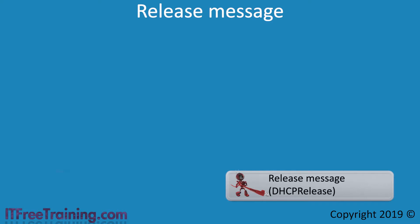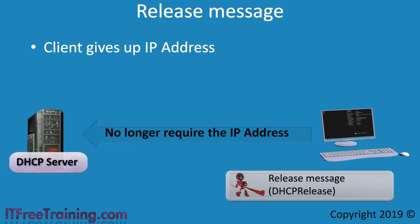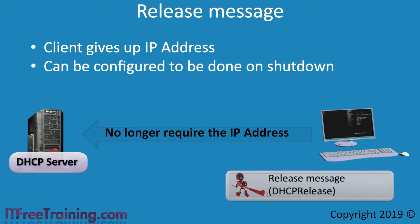The next message type is the Release message. The device sends this message to the DHCP server to tell it that it no longer requires that IP address. This can manually be performed by the administrator. Most operating systems will remember the last IP address they were allocated when shut down or restarted, and will attempt to continue using that IP address. The operating system can be configured to release an IP address on shutdown — an administrator may configure this when a network is running out of IP addresses.